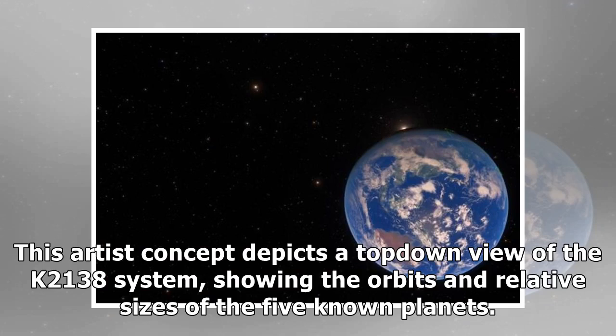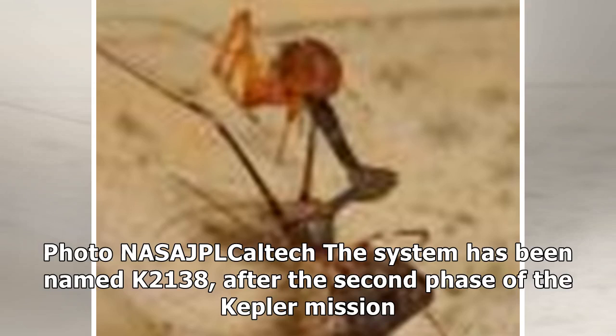This artist concept depicts a top-down view of the K2-138 system, showing the orbits and relative sizes of the five known planets. The system has been named K2-138, after the second phase of the Kepler mission.